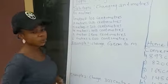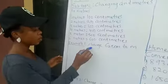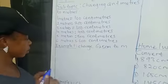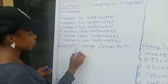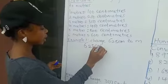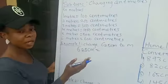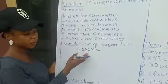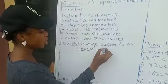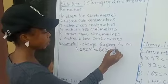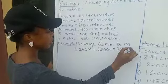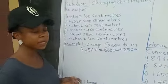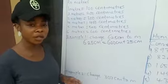Let's do Example 1. We want to change 625 centimeters to meters. Now, to change we will split 625: that would be 600 centimeters plus 25 centimeters. If you have to change from centimeters to meters, we are going to divide by 100.